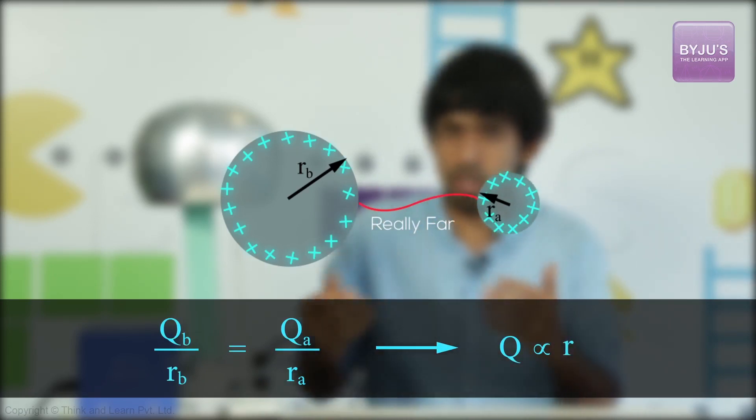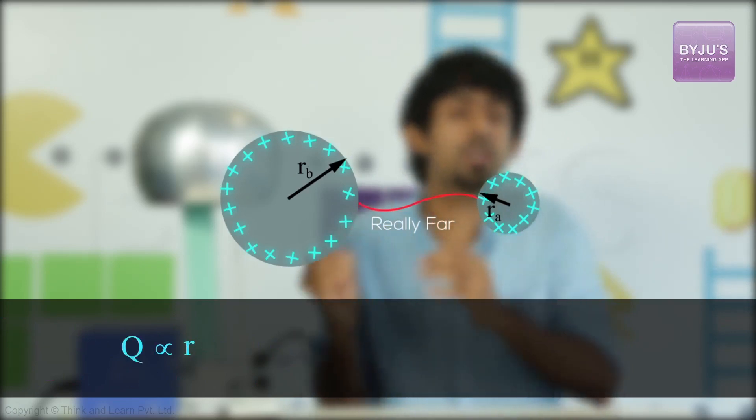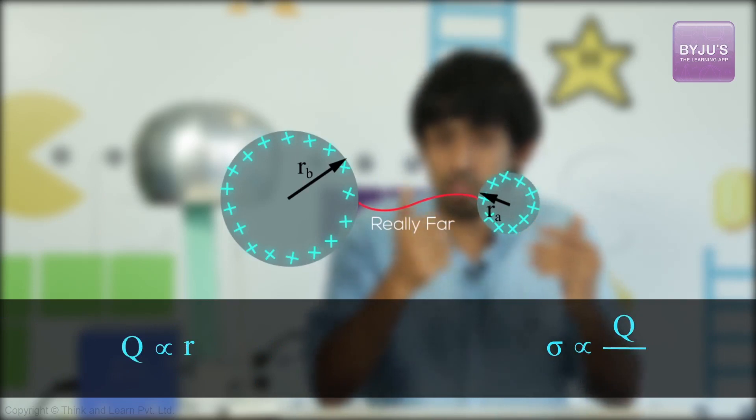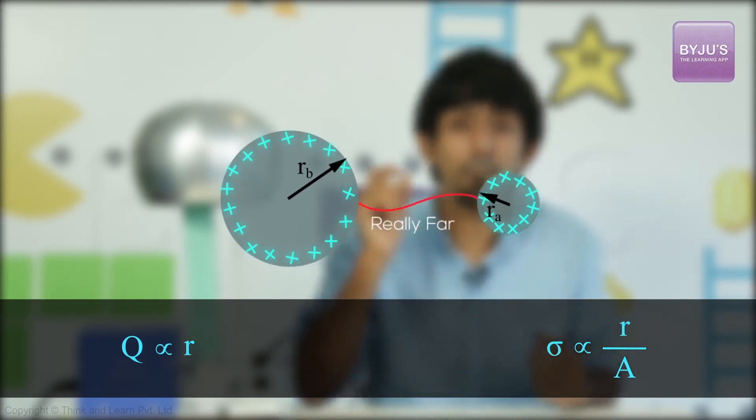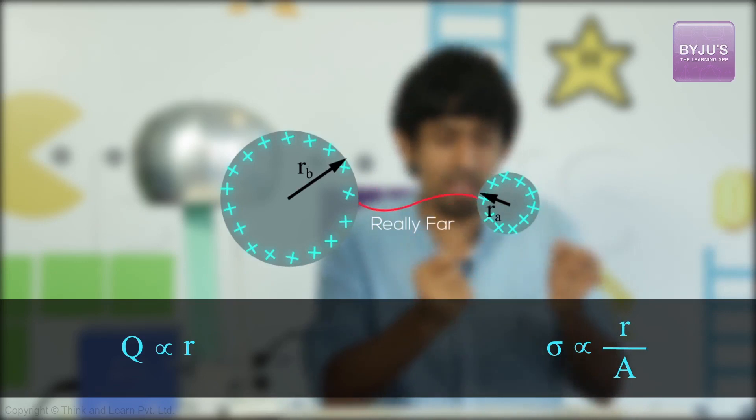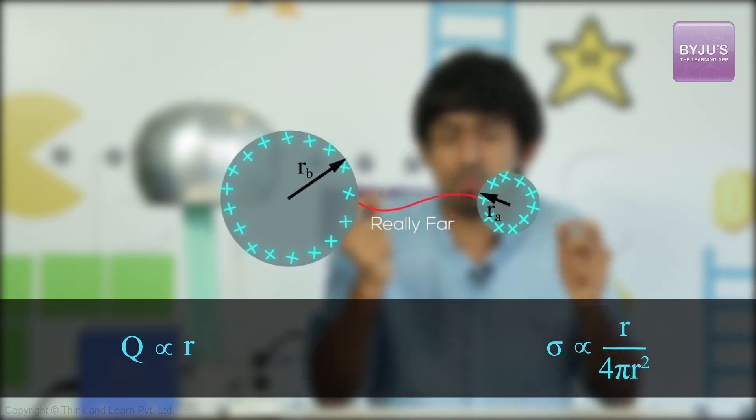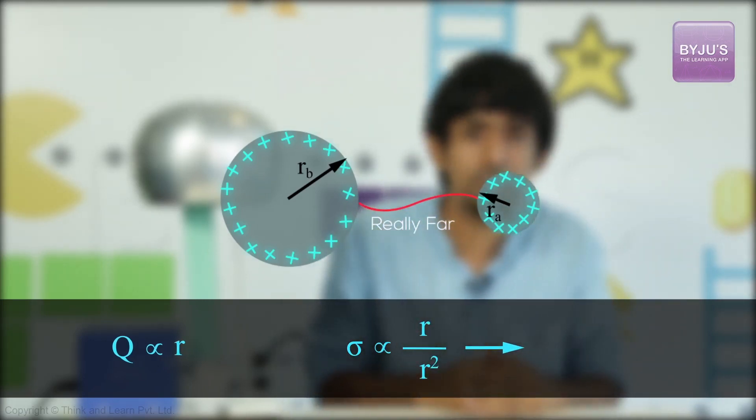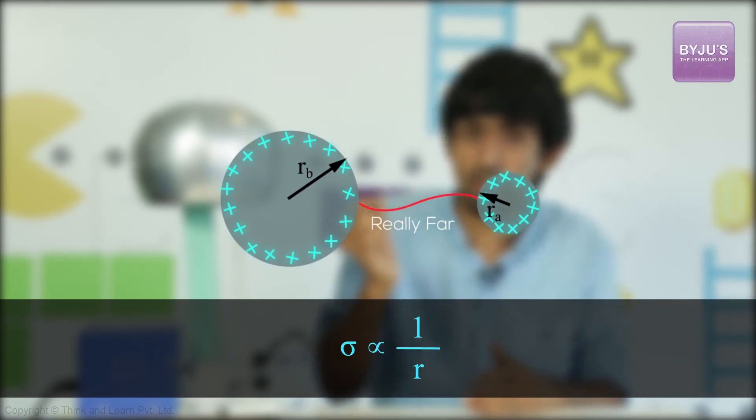But, what is the surface charge density proportional to? It's the total charge divided by the total surface area. So, it's clearly proportional to the amount of charge, which means it's proportional to the radius of it. But, it's inversely proportional to the area, surface area, which is 4π r squared, which means the surface charge density is proportional to the radius. But inversely proportional to the radius squared, which in effect means it's inversely proportional to the radius itself. So the surface charge density is inversely proportional to the radius for a given ball.